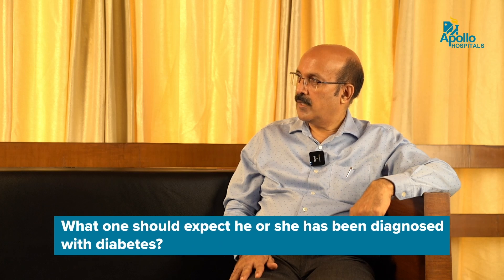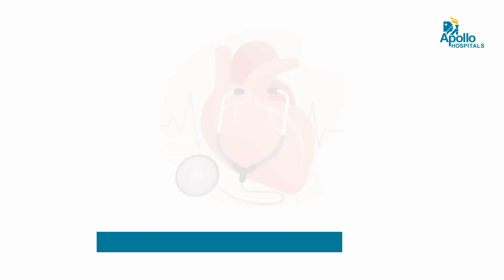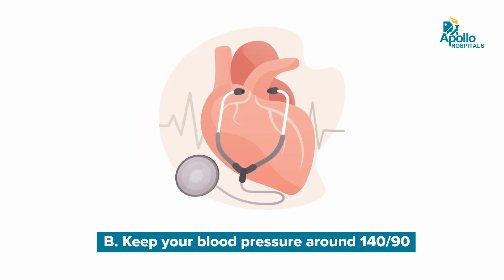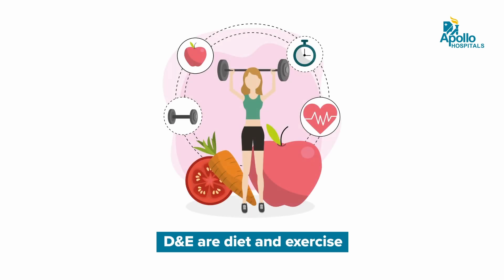What should one expect after being diagnosed with diabetes? The basic thing is: it is not the end of your life. Remember A, B, C, D, E. A means keep your blood sugar under control with HbA1c around 7. B means keep your blood pressure around 140 by 90. C means keep your bad cholesterol — LDL — less than 100 mg/dL. D and E are diet and exercise. These are the five important pillars once you develop diabetes.